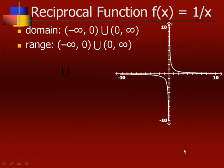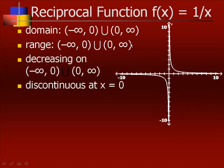For the function f of x equals 1 over x, the domain goes from negative infinity to zero, then from zero to infinity. It cannot be zero because if x were zero, the function would be undefined. The range is the same: y values going from negative infinity to zero, union with zero to infinity.